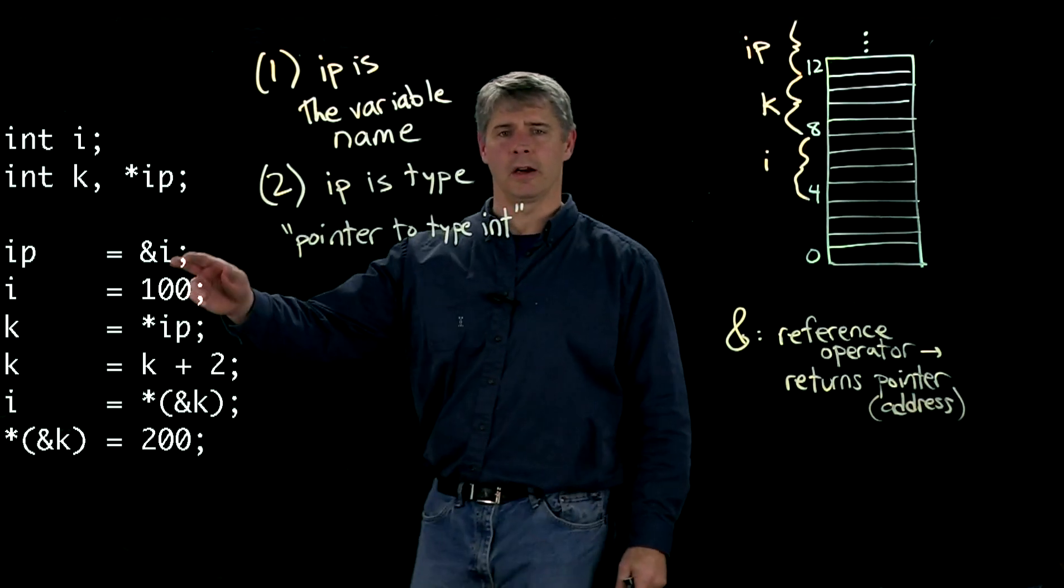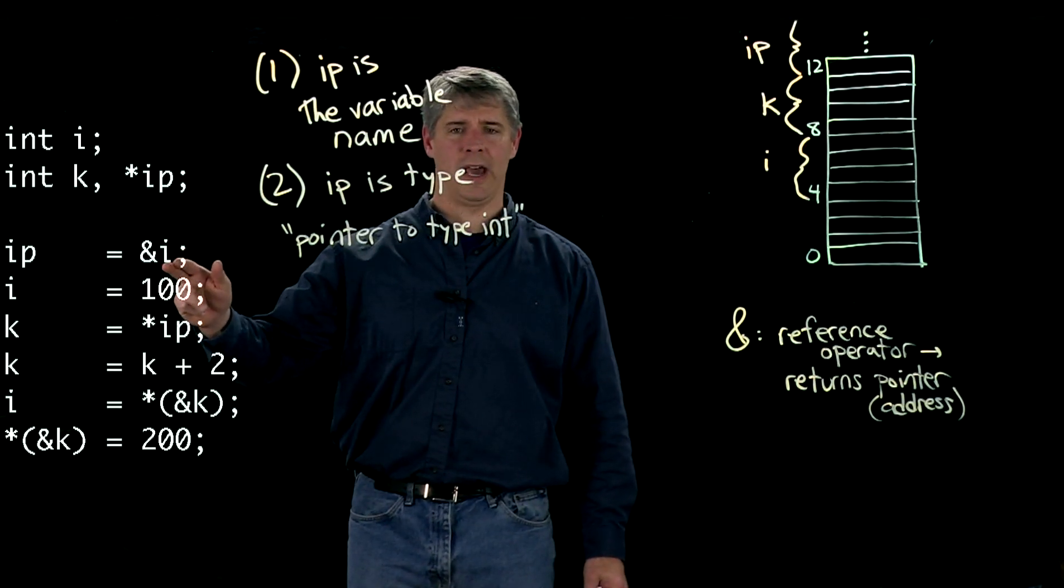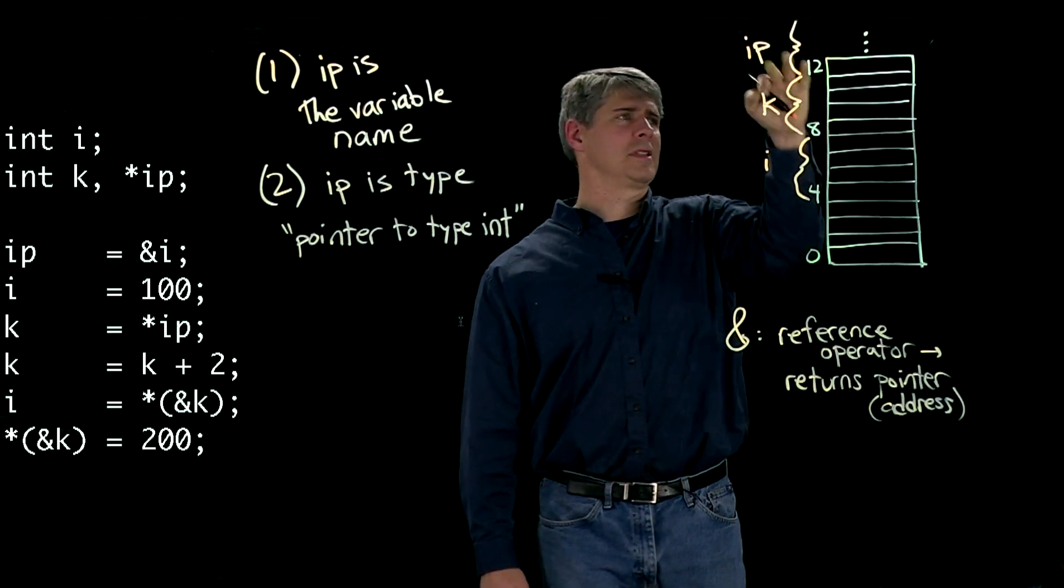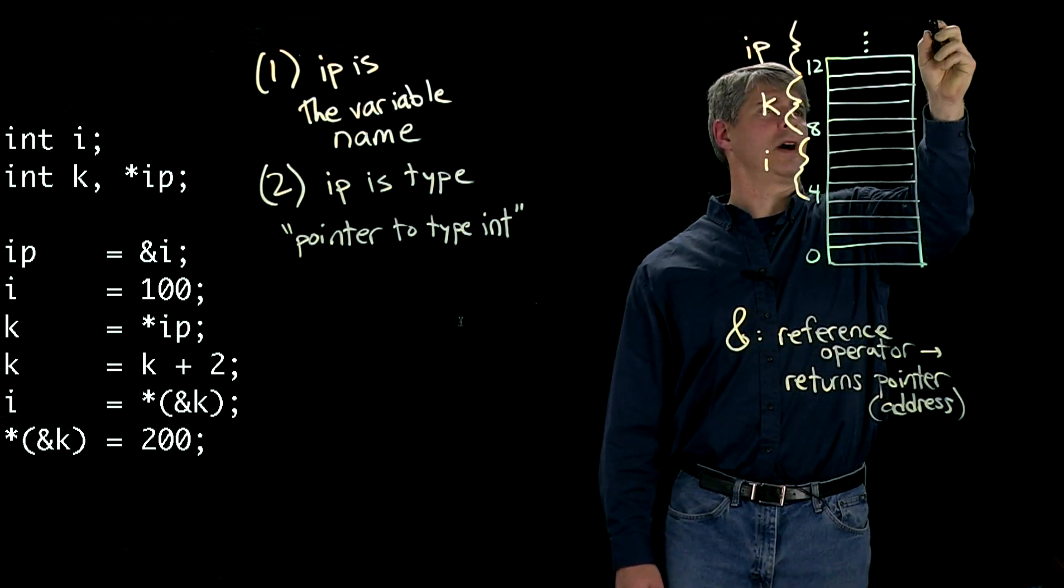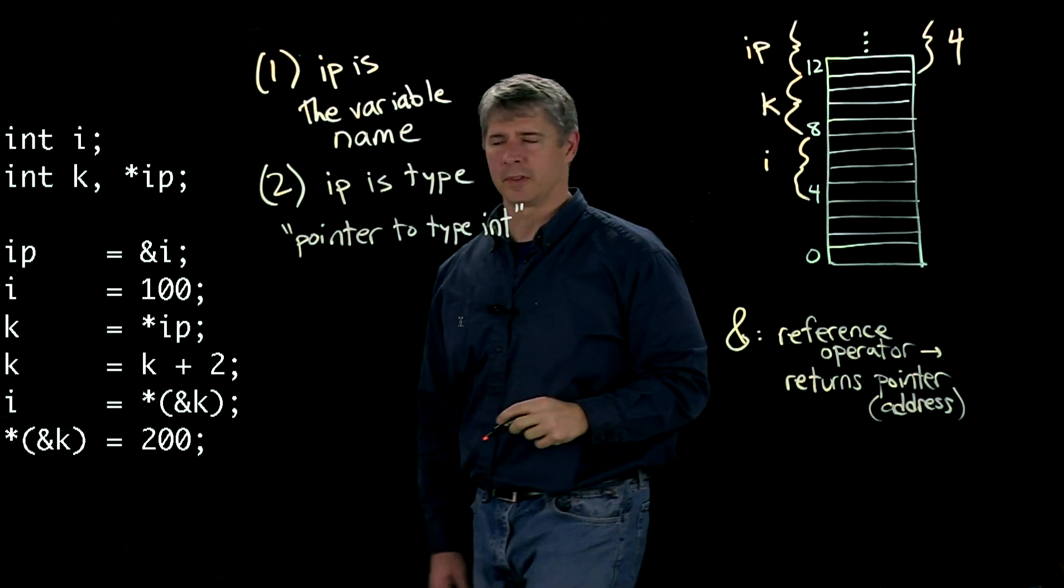So what's happening here is it's going to say, okay, ip is equal to the address of i. So i here, the address we can see is 4. So that means that ip, the contents of ip, is going to be 4, the address of i. So that's what happens in that line.